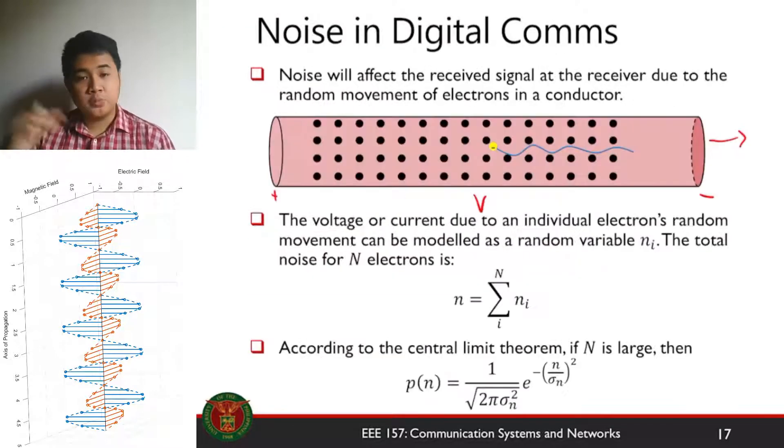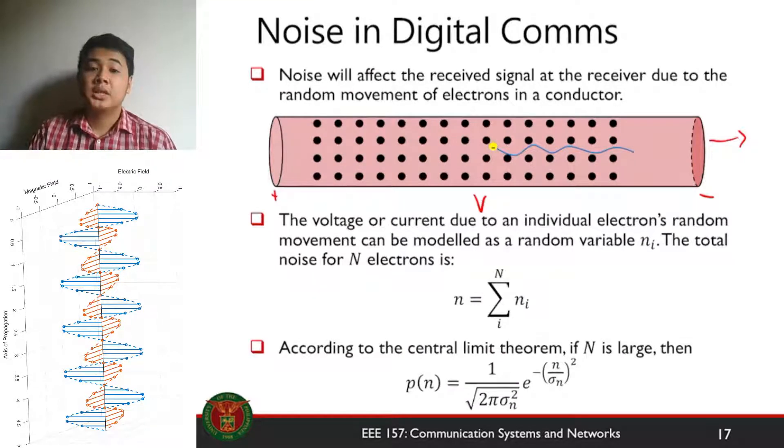Now if you zoom in you will see that the electron will collide with different parts of your conductor on its atoms and other electrons resulting in a random movement. And this random movement intensifies if you have a larger temperature.